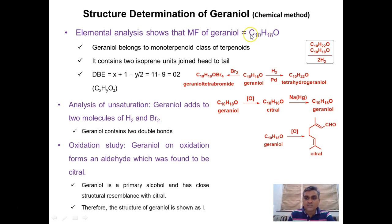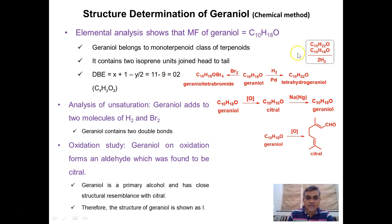The molecular formula C10H18O is very useful information for structure determination. Geraniol contains carbon, hydrogen and oxygen, meaning it is a terpenoid molecule. It contains 10 carbon atoms, indicating two isoprene units, and because of this it belongs to the class of monoterpenoids. According to the special isoprene rule, we can assume that these two isoprene units are joined through head-to-tail linkage. From the molecular formula we also calculate the degree of unsaturation, or double bond equivalence.